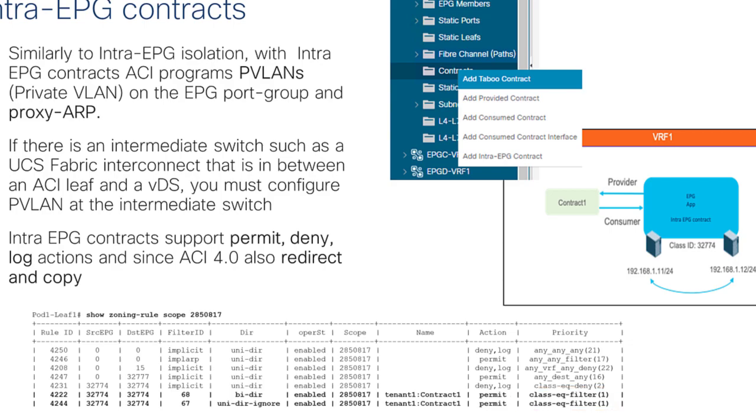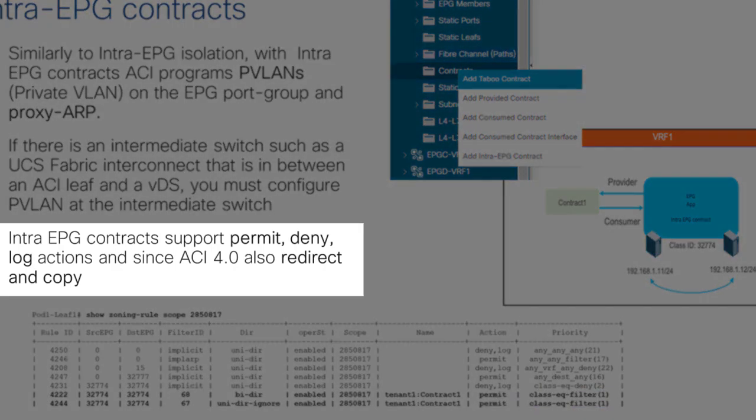Contracts can be configured not just for permit — you can also use deny, permit-plus-log, deny-plus-log, and since the 4.0 release, also redirect, copy, or device actions if you want to send a copy of traffic to a firewall or IPS.